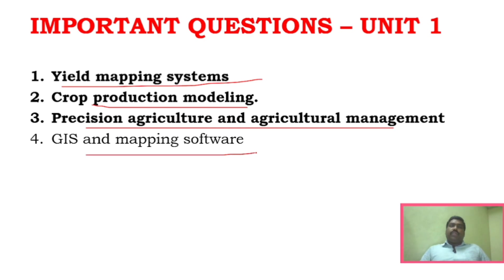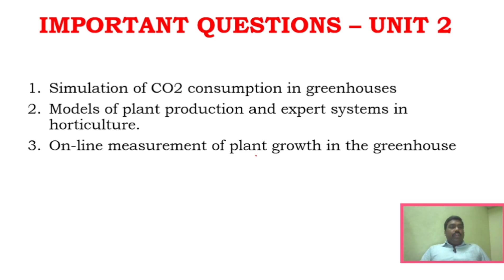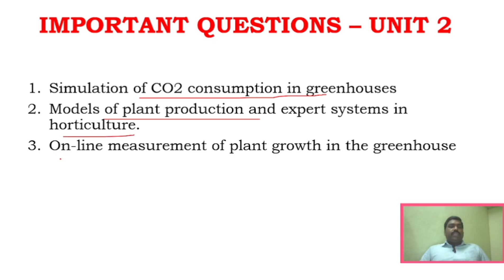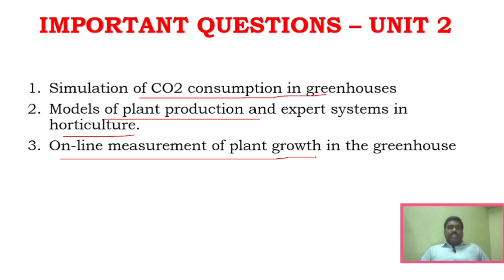For Unit 2, the three important areas are: simulation of CO2 concentration, models of plant production and expert systems in architecture and horticulture, and online measurement of plant growth in greenhouses.